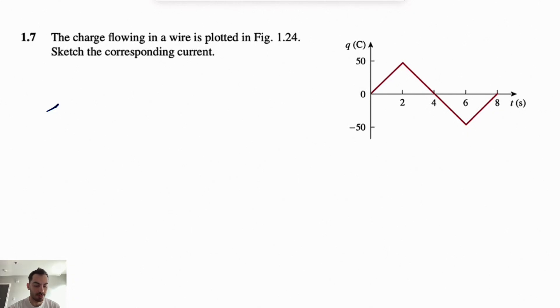Alright guys, welcome back. We're going to be solving another question from the Fundamentals of Electric Circuits in this channel, and this is going to be very similar to what we solved in the previous question. We have the charge flowing in a wire that is plotted on the figure on the right-hand side, and we need to sketch the corresponding current.